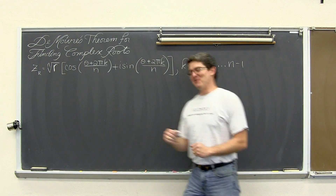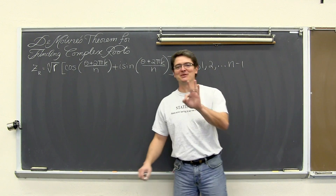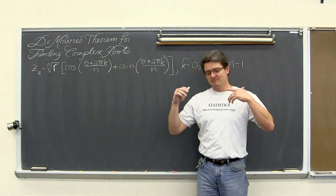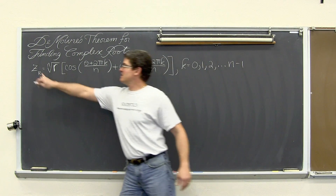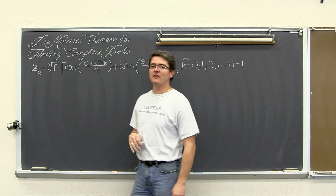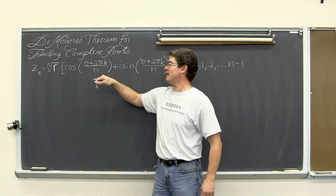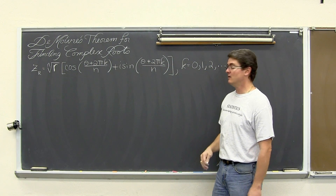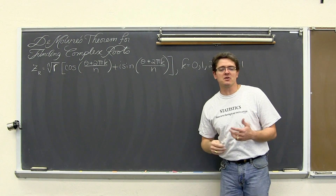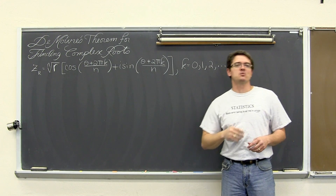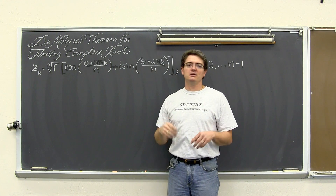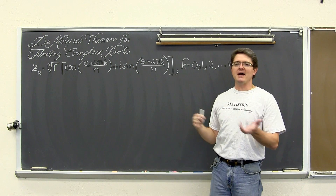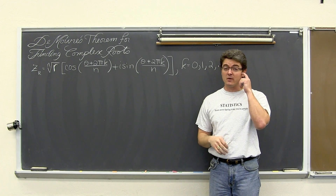I am Mr. Tarrou. We are going to do three examples of using De Moivre's theorem for finding complex roots in polar form. So we have z sub k equals the nth root of r times the cosine of (theta plus 2pi·k over n) plus i sine (theta plus 2pi·k over n), where k is a counting value starting at zero and going up to n minus one. This formula is written in radians, but you can alternate back and forth between radians and degrees.